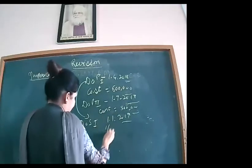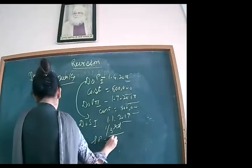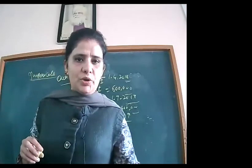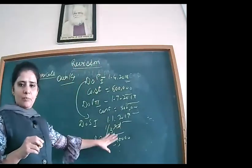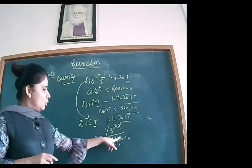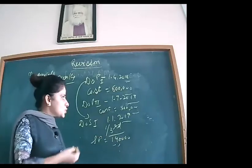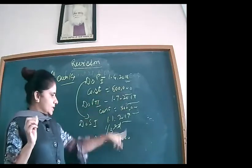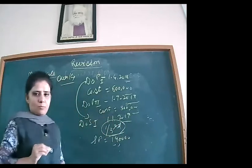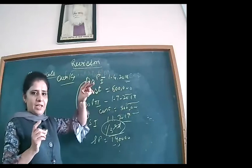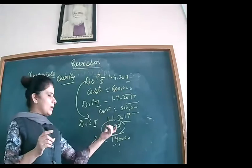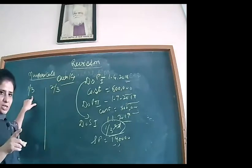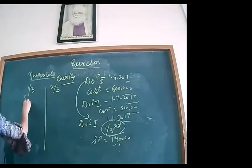We are selling one-third of the first plant at a selling price of ₹1,40,000. The rate of depreciation is 20% under the straight-line method. I will calculate how long the asset was with me and how much depreciation was charged, to find the book value, then compare with the selling price to find profit or loss.